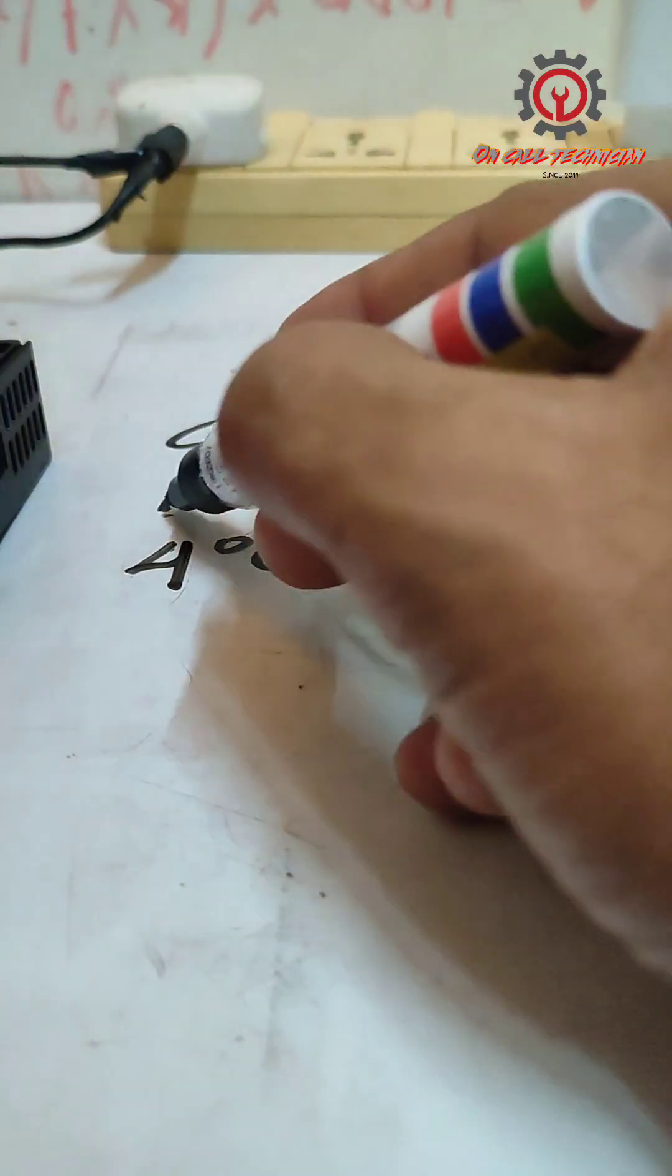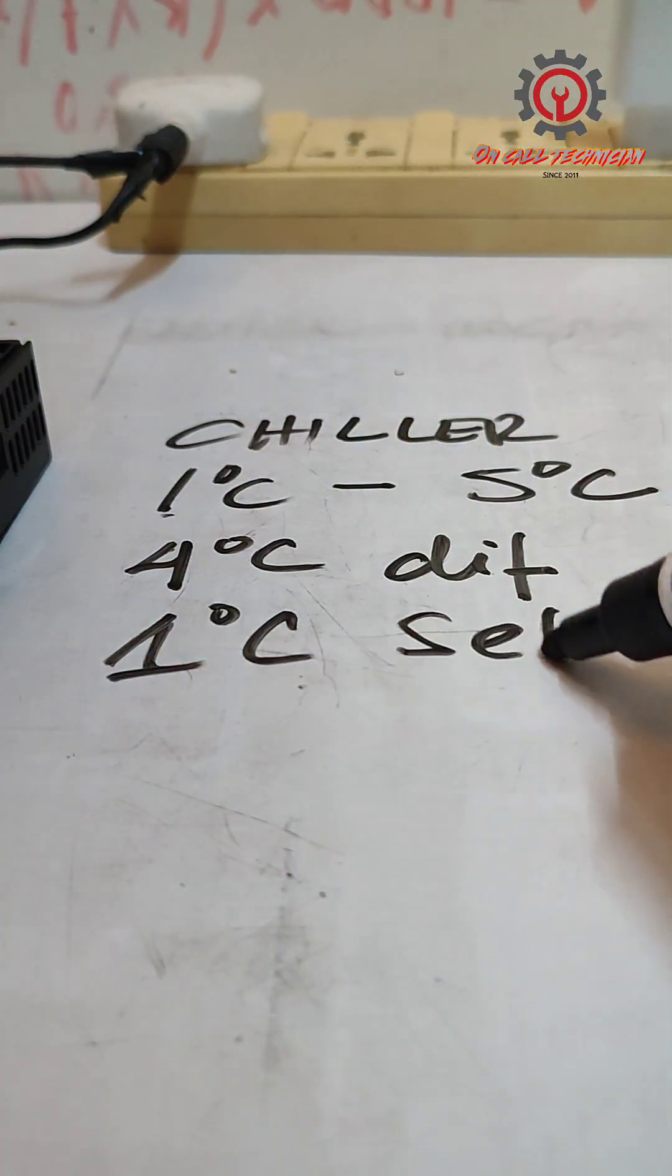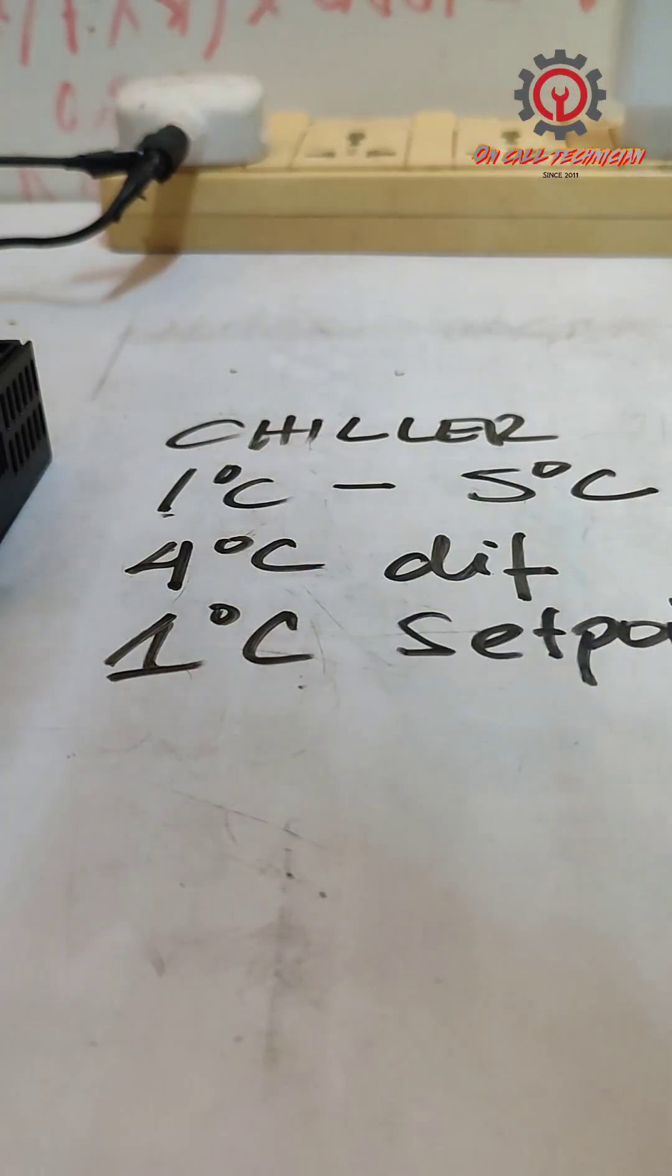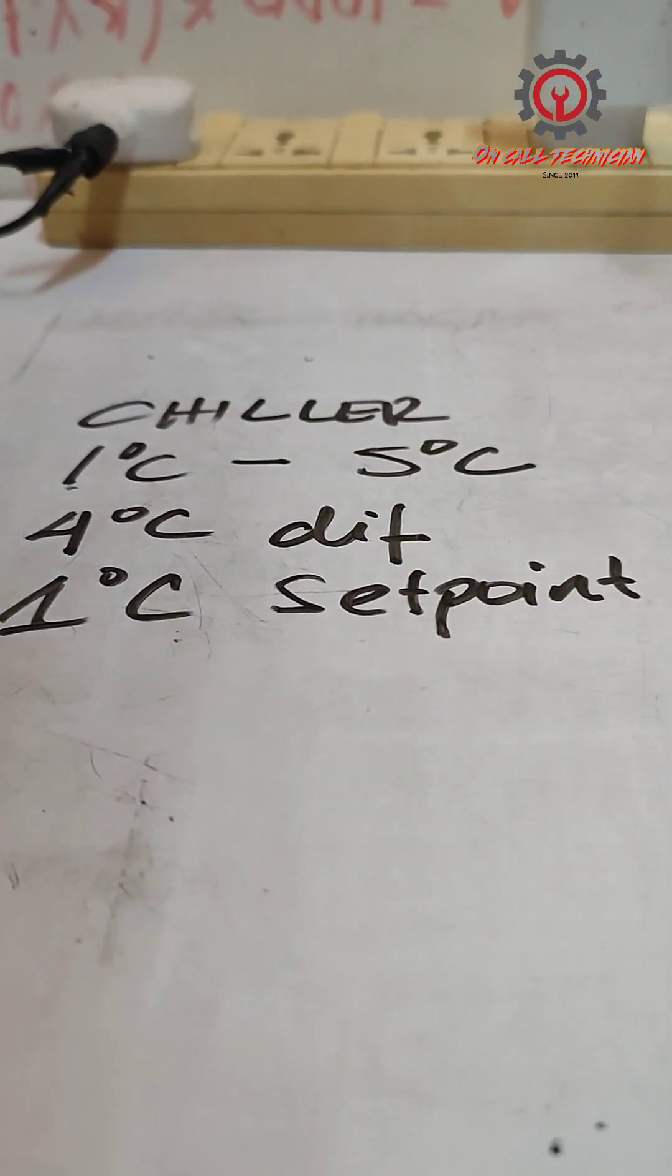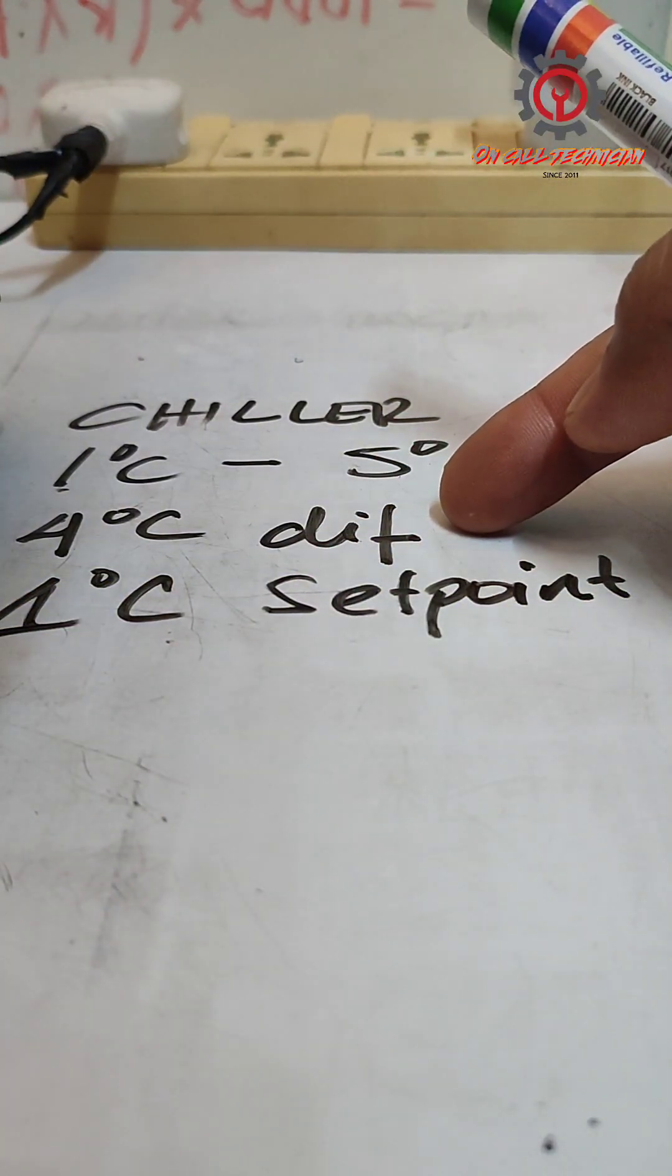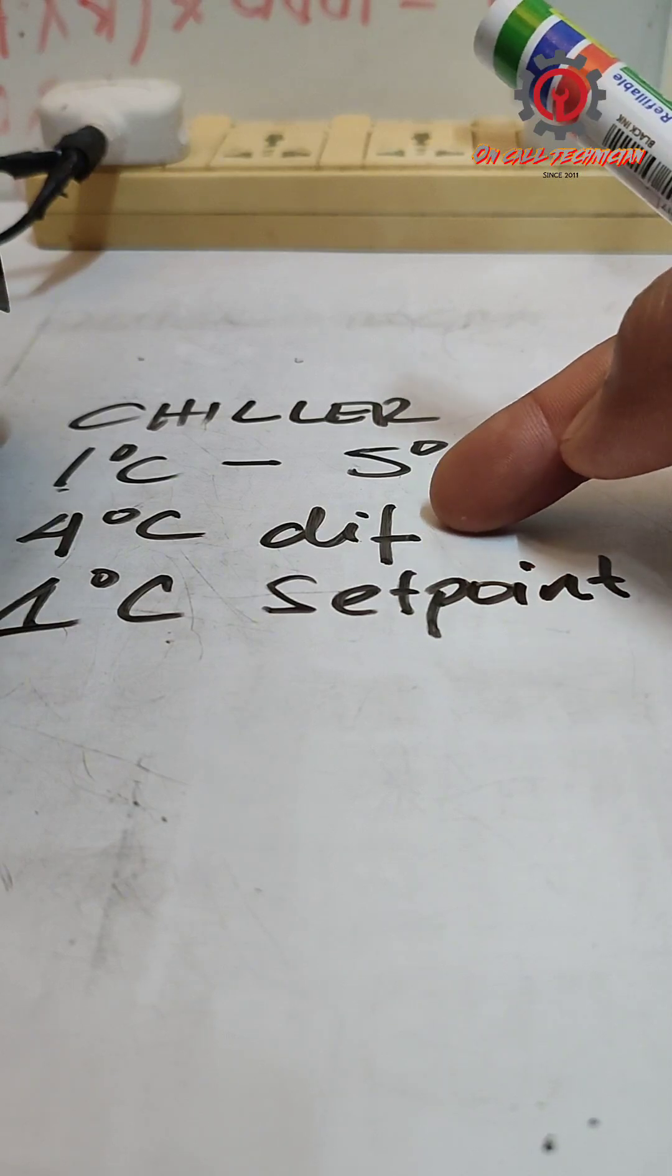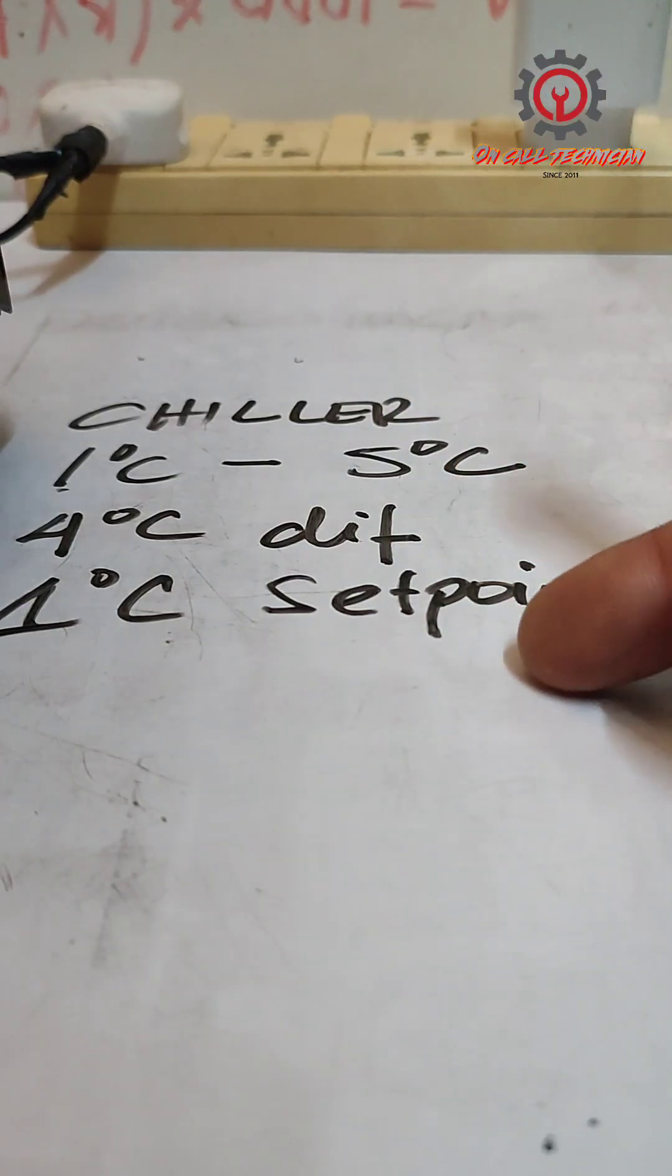While this one here is our set point. We just finished changing the set point, and now we proceed to the differential, which is the cut-in of the compressor. Set point is the cut-off of the compressor.